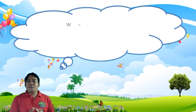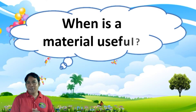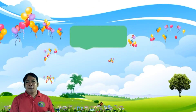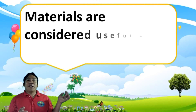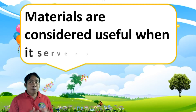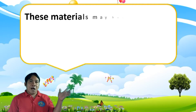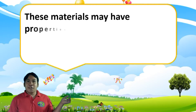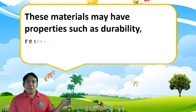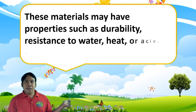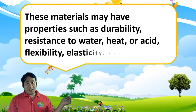When is a material useful? Materials are considered useful when they serve a purpose. These materials have properties such as durability, resistance to water, heat, or acid, flexibility, elasticity, and hardness.